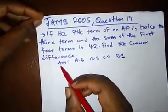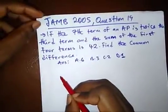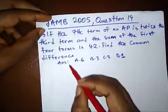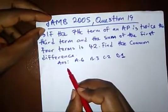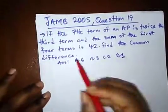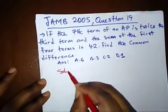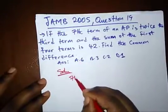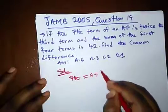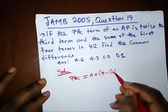Another question here is, if the 7th term of an AP is twice the 3rd term, and the sum of the first 4 terms is 42, find the common difference. So we have here 7th term, which is A plus bracket 7 minus 1 D.